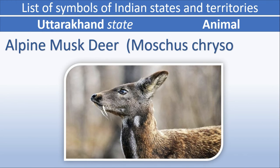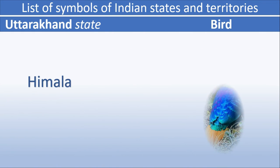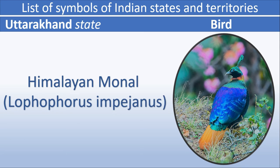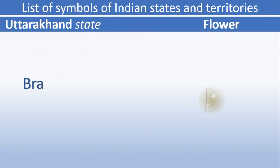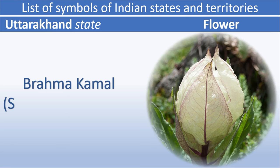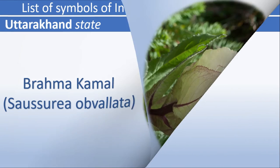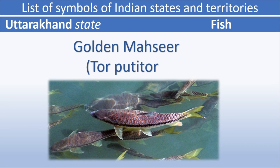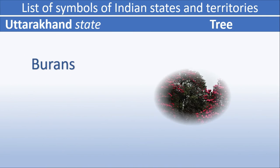Uttarakhand animal: Alpine Musk Deer. Uttarakhand bird: Himalayan Monal. Uttarakhand flower: Brahma Kamal. Uttarakhand fish: Golden Mahseer. Uttarakhand tree: Burans (Rhododendron).